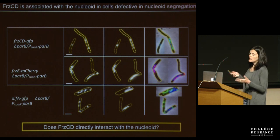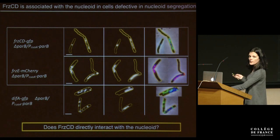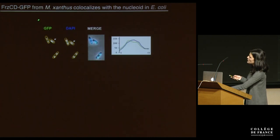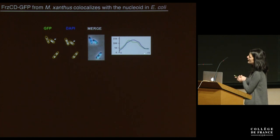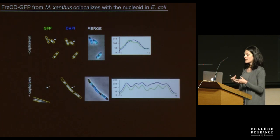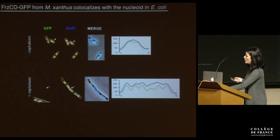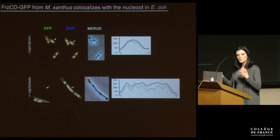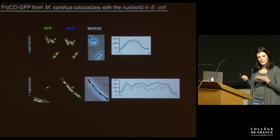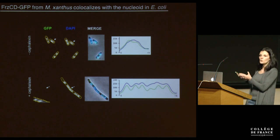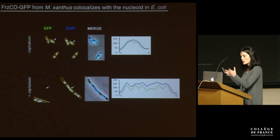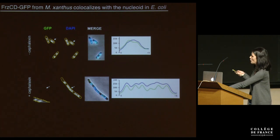The question was: can FrzCD directly interact with the nucleoid? First, we expressed FrzCD-GFP from Myxo in E. coli. Even though E. coli cells are much smaller than Myxo cells, we can still resolve co-localization of FrzCD with the nucleoid. We treated cells with cephalexin to obtain artificially elongated cells where we can discriminate the different nucleoids, and we can see that FrzCD co-localized with each one of the nucleoids, suggesting FrzCD could actually interact with different nucleoids. But this still did not answer whether FrzCD directly interacted with the nucleoid, because there could still be a third partner common to Myxo and E. coli.